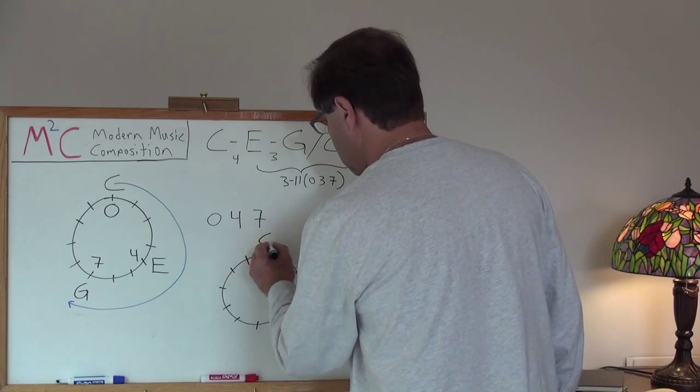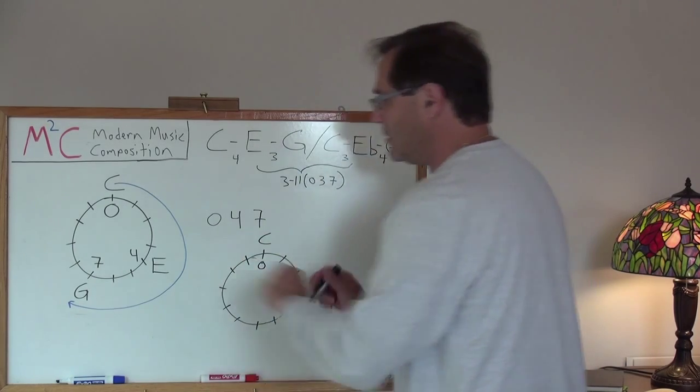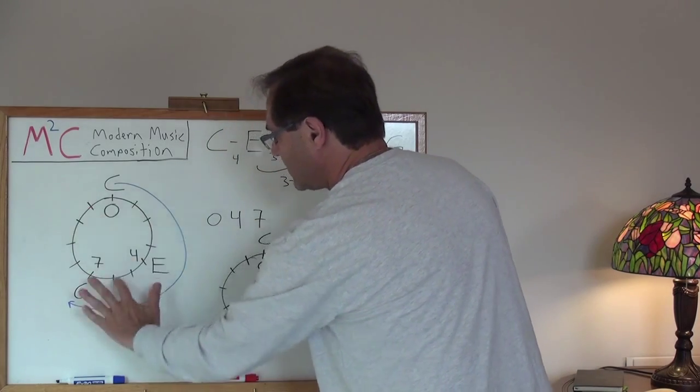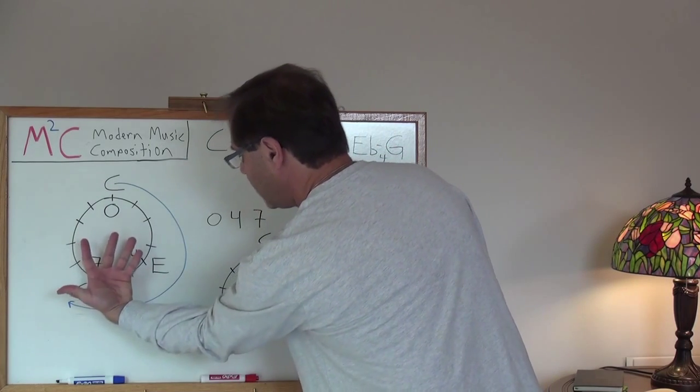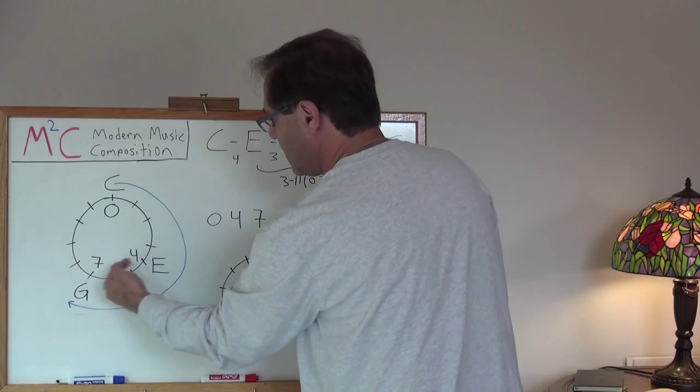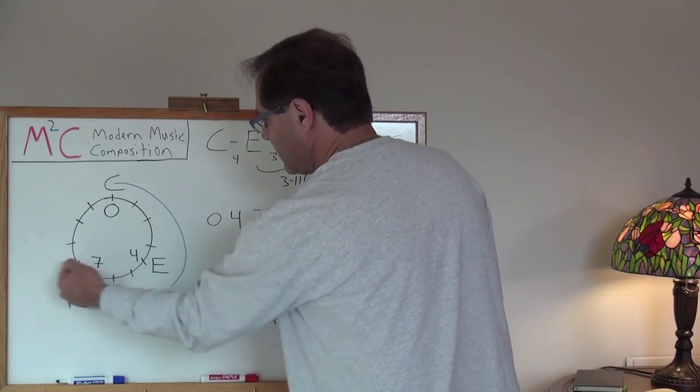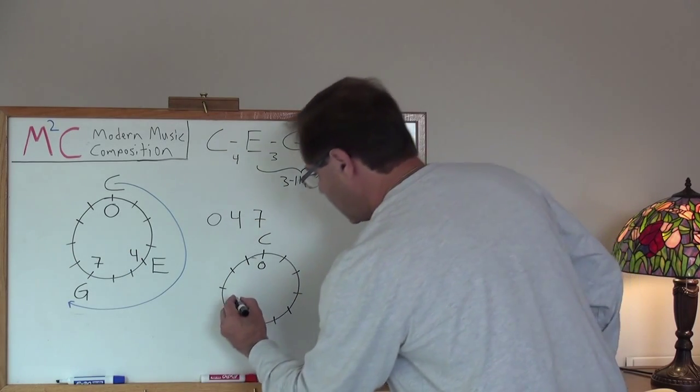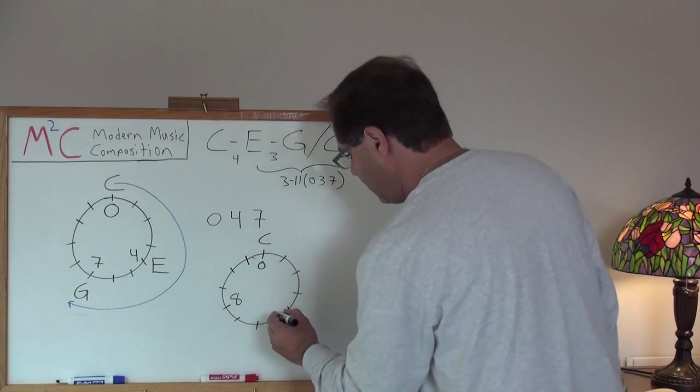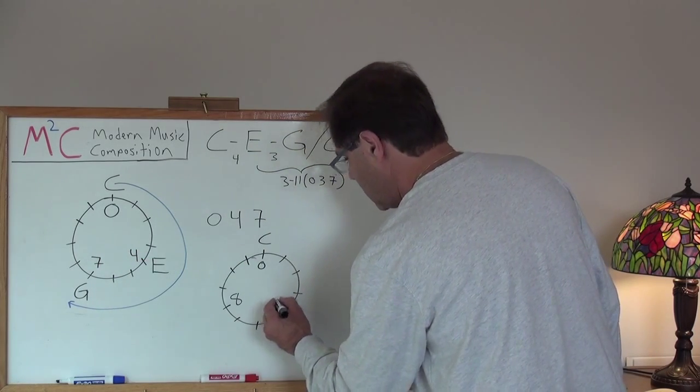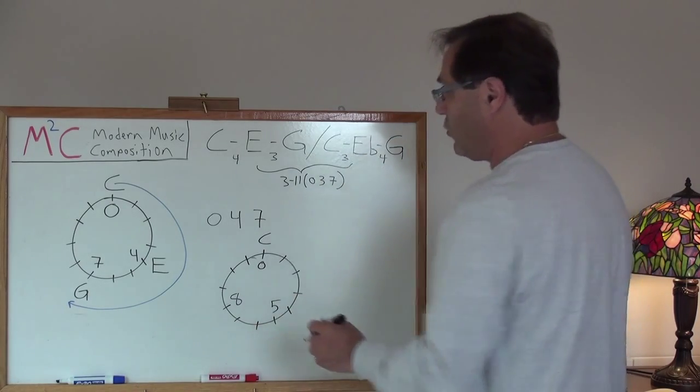So let's do that. So C stays C because remember, in this inversion, we're taking it with respect to the 0, 6 axis, the C, F sharp axis, and flipping it. So E flips over to 4, position flips over to 8. So now we've got an 8. 7 position flips over to 5. So now we've got the 0, 5, 8.